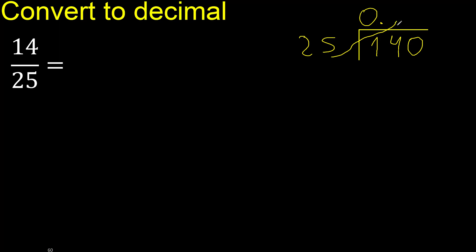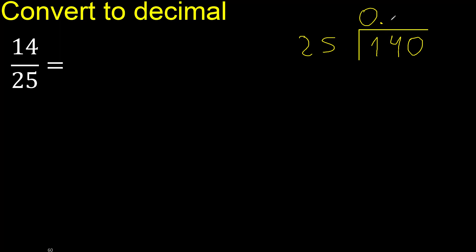Multiply by which number is nearest to 140 but not greater? Multiply by 6 is 150 — that is greater. Multiply by 5 is 125 — ok, that is not greater.